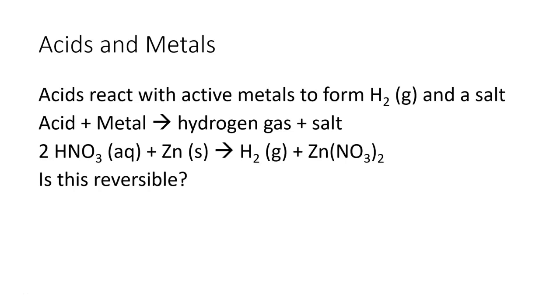So there are certain types of metals that are called active metals. We won't get into too much about how we determine which ones those are. But when an acid reacts with an active metal, it's going to form hydrogen gas and a salt.